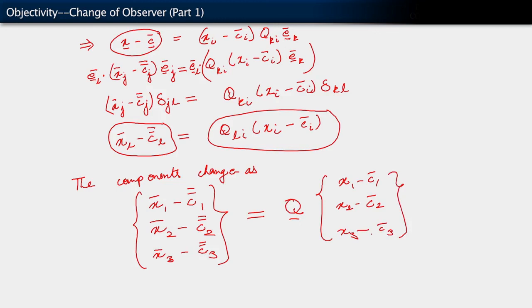Those components change as x bar 1 minus c double bar 1, x bar 2 minus c double bar 2, x bar 3 minus c double bar 3, equals q, the tensor q, acting on x1 minus c bar 1, x2 minus c bar 2, x3 minus c bar 3. So, in terms of components, what we see, if we just write the components using linear algebra notation, what we may say is that x bar minus c double bar, and we understand this as essentially the vector that I've written just above in the brace brackets. Those components, combined into a vector, transform as this.